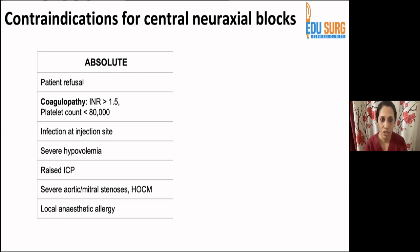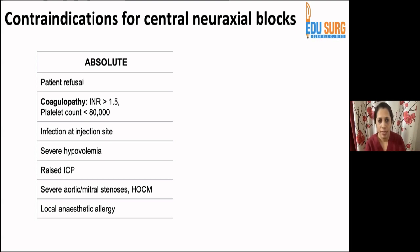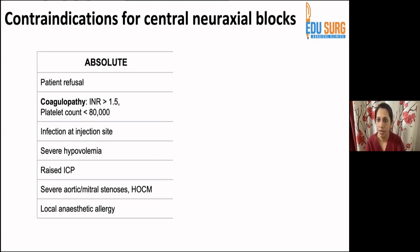The absolute contraindications for central neuraxial block include: patient refusal — never coerce the patient; coagulopathy of any reason, including bleeding disorders or blood thinners, because we do not want spinal bleeding or paraplegia. Any INR greater than 1.5 or platelet count less than 80,000 is a contraindication. Active infection at the injection site is also contraindicated, as it can introduce infection into the CSF or spine.